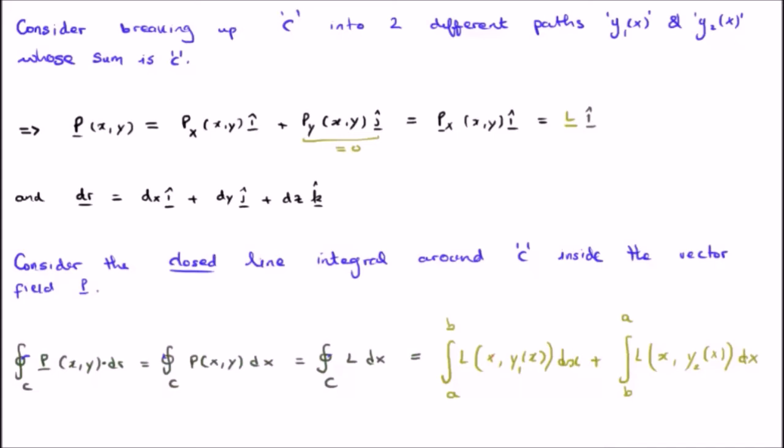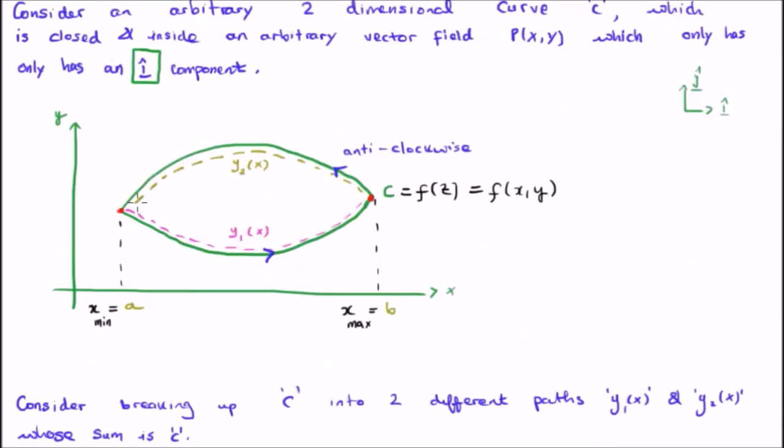It is extremely important to note the limits. Note that on the lower curve, where we have L a function of x and y1, we start at a and we go to b. So, we're on the lower curve down here, we start at a and we go to b.